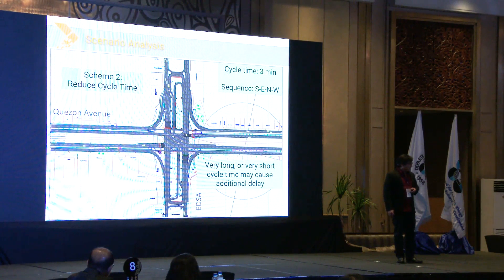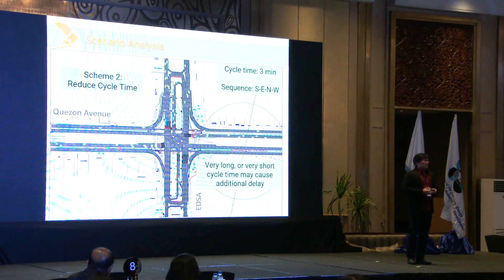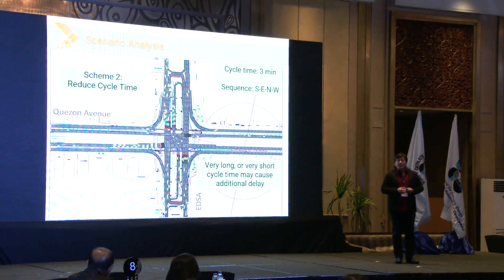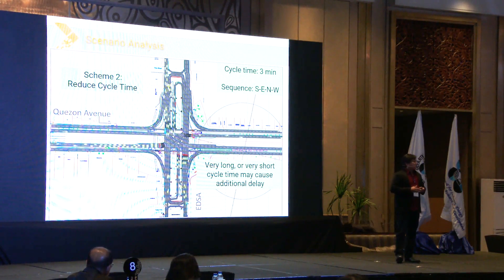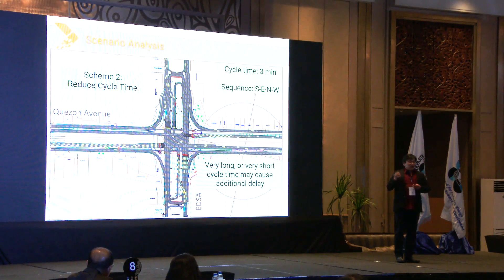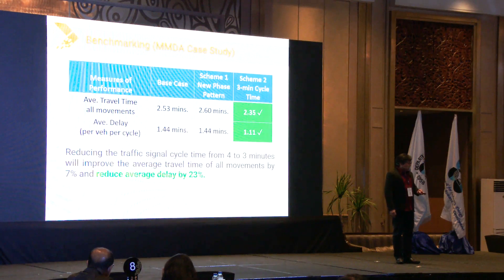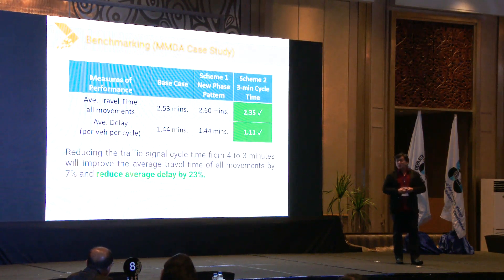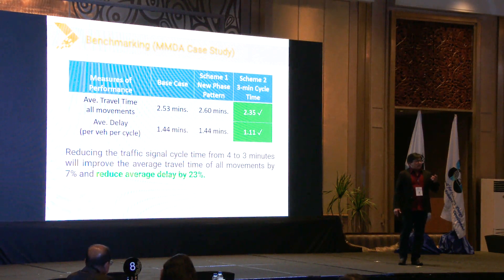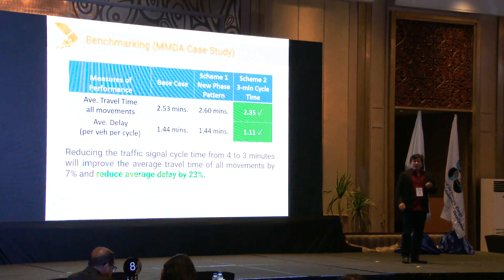Another alternative scenario would be to modify the cycle time. Cycle times that are very long or even very short can actually add to the delay. So in this scenario, we reduce the cycle time from the original four minutes to only three minutes. After simulation, we have a positive result — a significant improvement in traffic flow. We objectively conclude that scheme number two is the more significant alternative, as it significantly reduces travel time and delay compared with the base case.